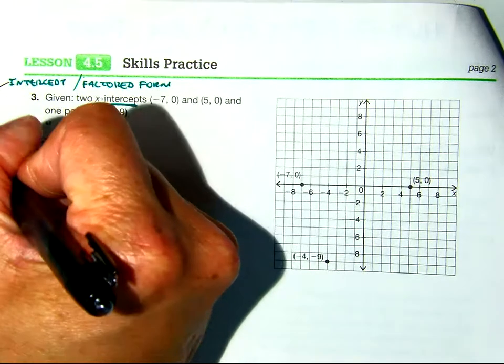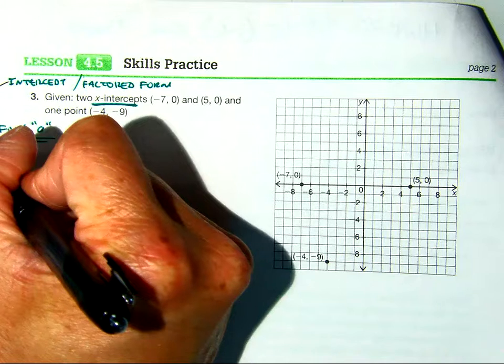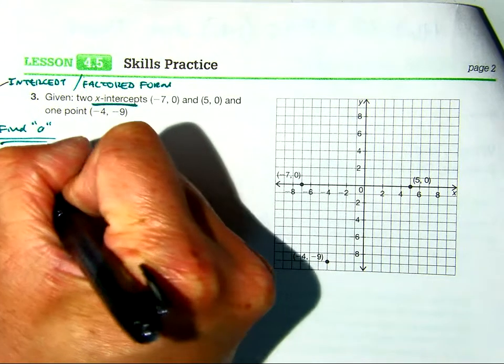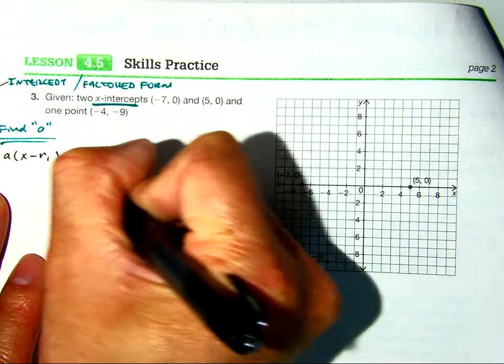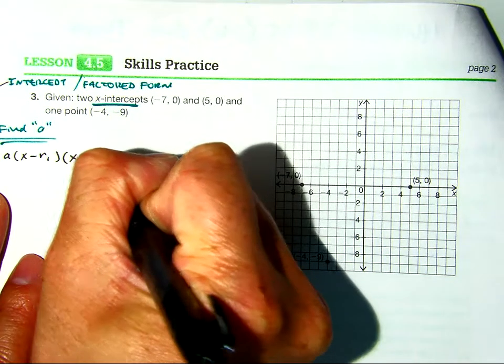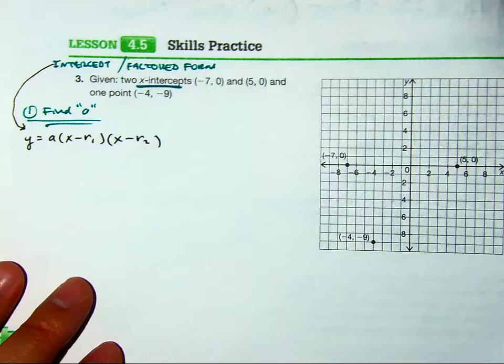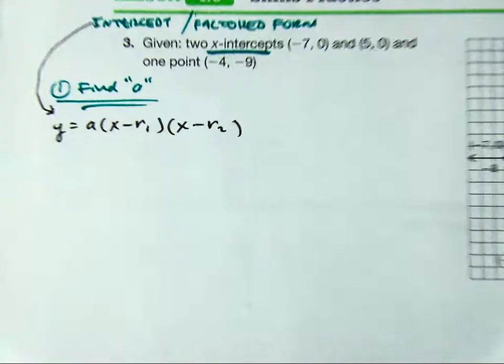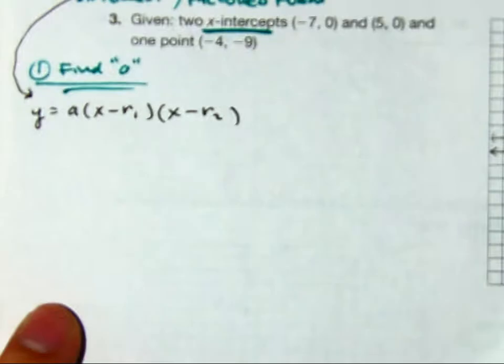My equation for factored form is this: y equals a times (x minus r1)(x minus r2). So, we're going to solve for the a value.